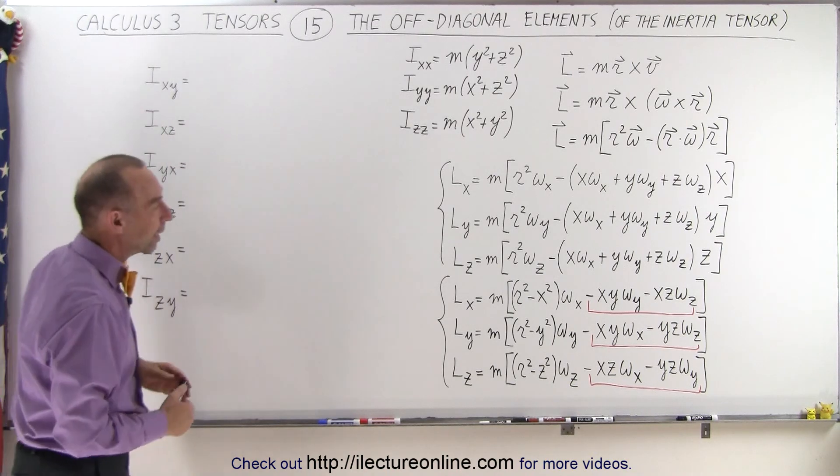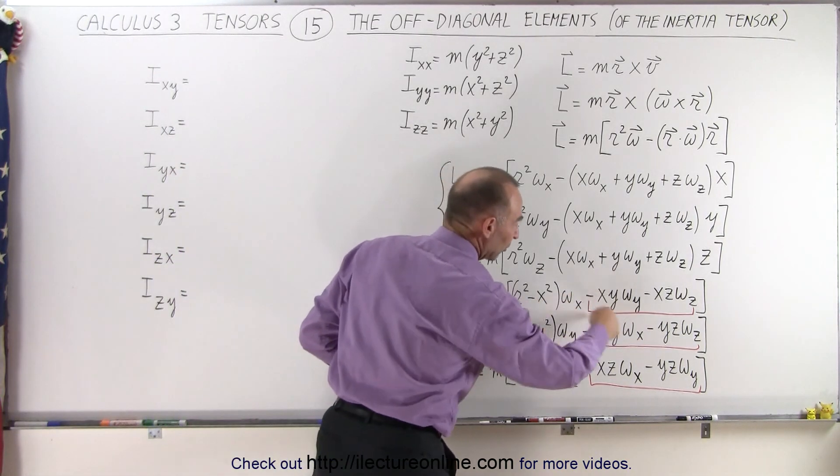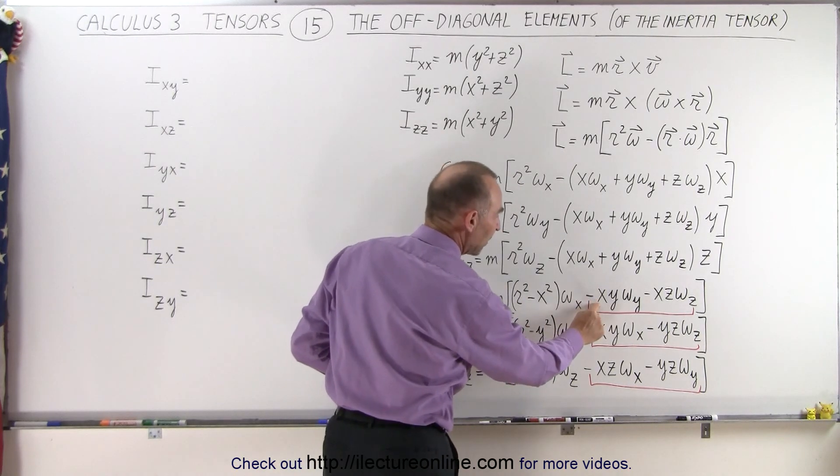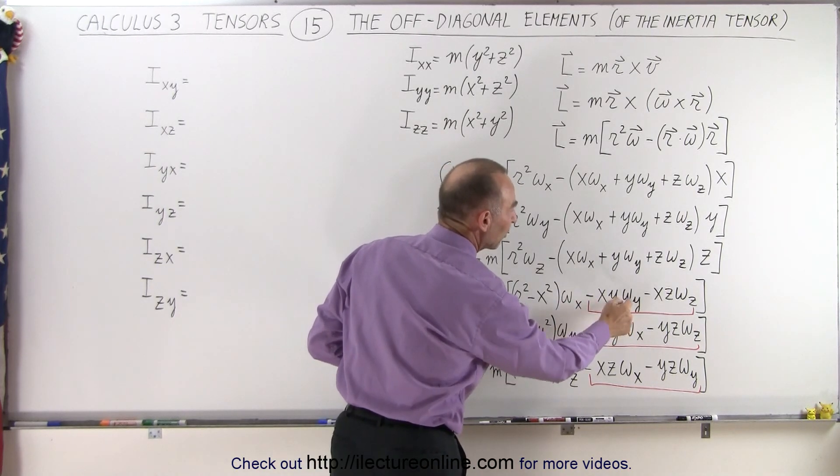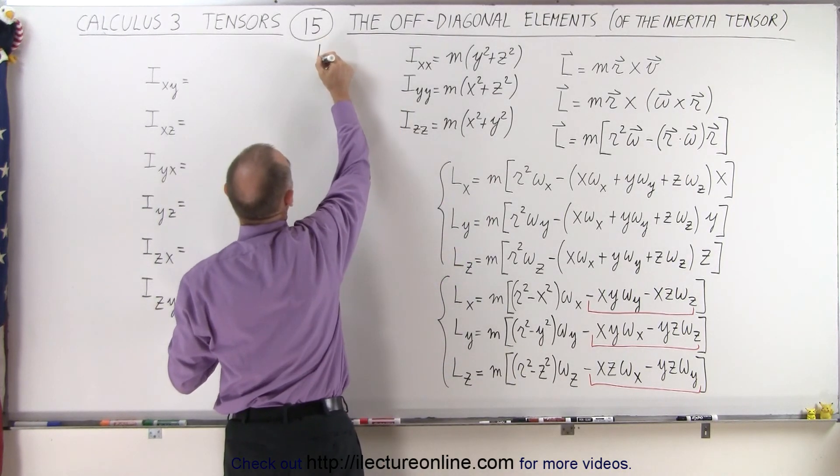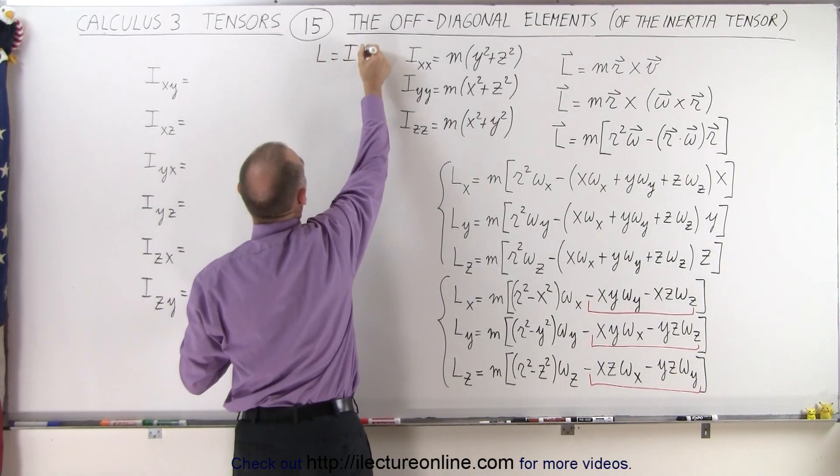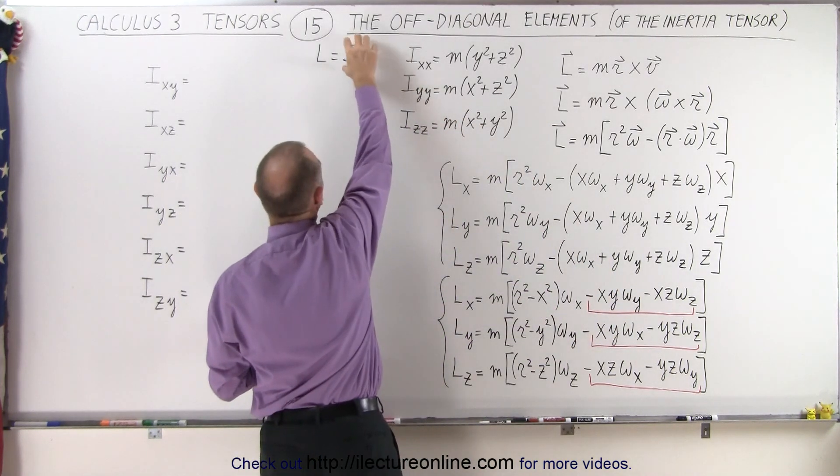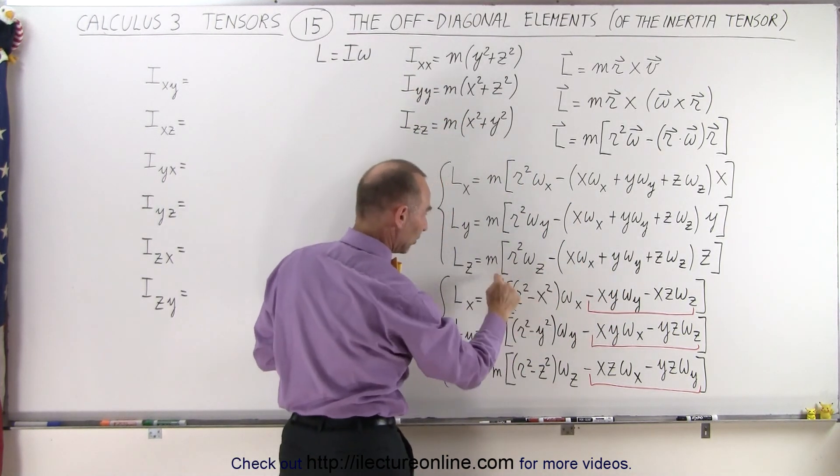And so for ixy we go to this term right here so we're going to multiply the mass times minus xy. The omega sub y of course we don't take because remember that the angular momentum is equal to i times omega.